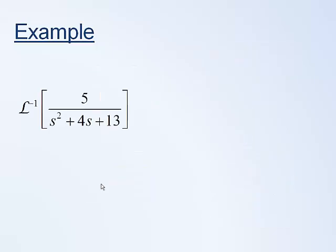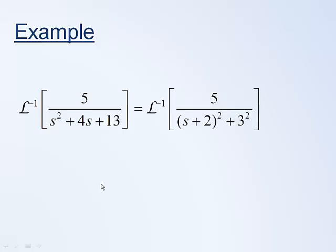Here's a more complicated example. If we look at the poles of this transfer function, we can see that the poles are complex. So we would expect to get a decaying sinusoid — the real part gives us an exponential, and the imaginary part gives us a sine or cosine. The way to recognize this form is to first complete the square in the denominator.